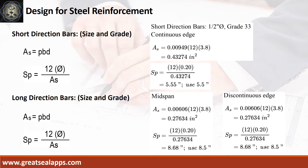At short direction: given continuous edge ROE equals 0.00949, b equals 12 inches, d equals 3.8 inches, the area of steel is 0.43274 square inches, and spacing for half-inch diameter bar is 5.5 inches. Given mid-span and discontinuous edge ROE equals 0.00606, b equals 12 inches, d equals 3.8 inches, area of steel for both is 0.27634 square inches, and spacing is 8.5 inches.